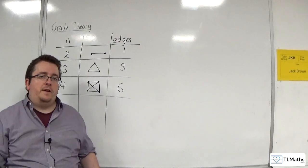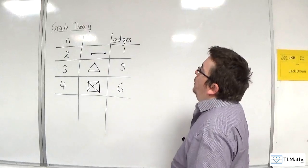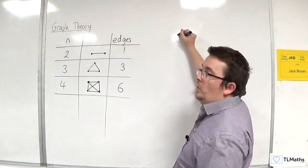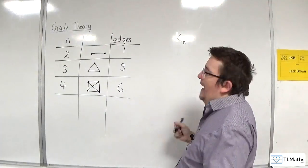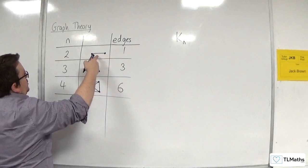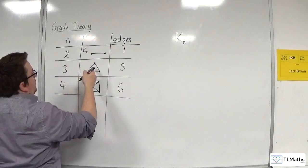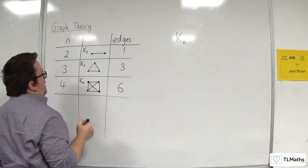Now, before we go any further, there is a notation for complete graphs that we need to be aware of. So, the complete graph with n vertices is referred to as Kn. So, this would be K2, this would be K3, this would be K4.